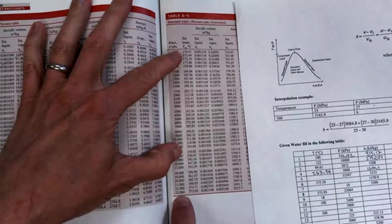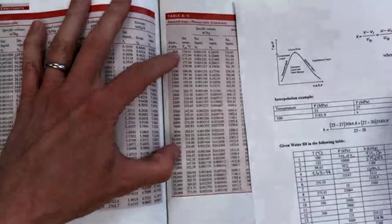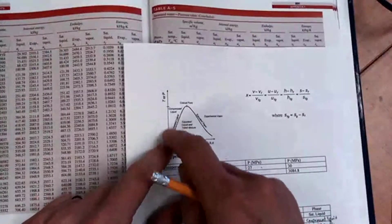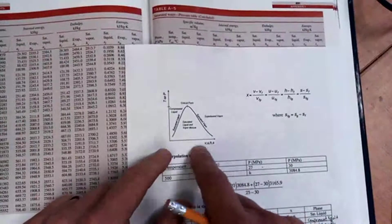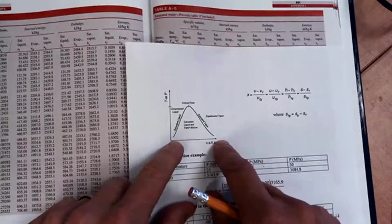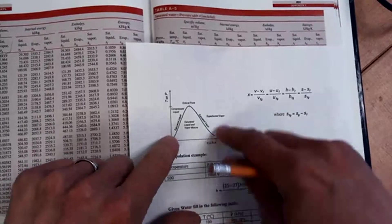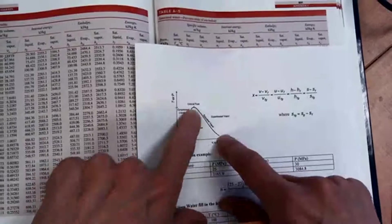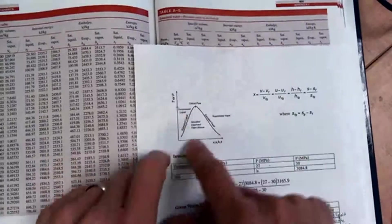And it ends, the table ends at 22,064. What does that mean that the table only goes to 22,064 kPa? Well, if you think back to the dome, this is the pressure axis and this is the volume or internal energy or the enthalpy or the entropy axis. So you can see this table, this specific, this saturated water table describes the saturated liquid line and the saturated vapor line.